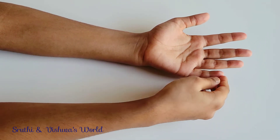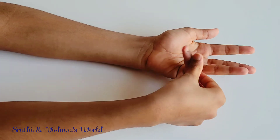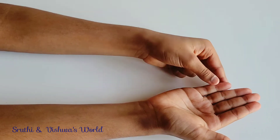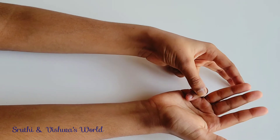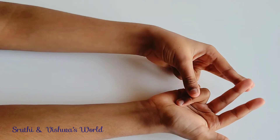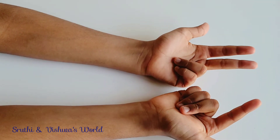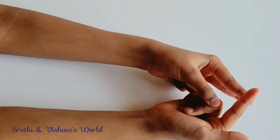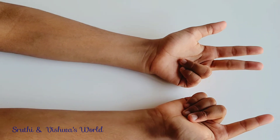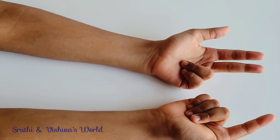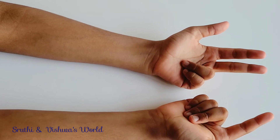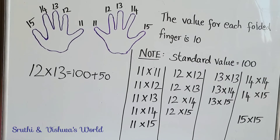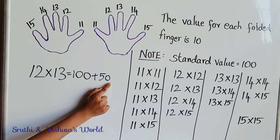For 12 times 13: for 12 we fold the pinky finger which is 11 and the ring finger which is 12. Now for 13 we fold the pinky finger 11, ring finger 12, and middle finger 13. So there are 5 folded fingers in total. The value for each folded finger is 10, so we do 5 times 10 which is 50. So write plus 50.